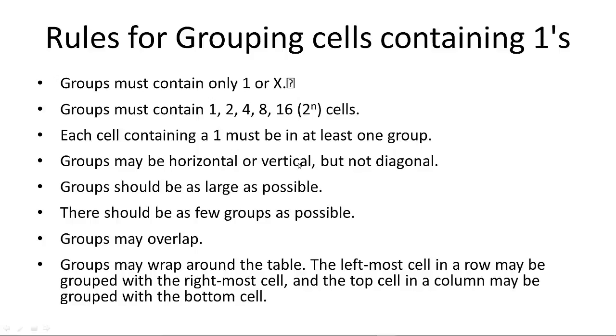Groups may be horizontal or vertical. We can't draw diagonal rectangles. Groups should be as large as possible, as I showed in the previous example. We want to draw the biggest rectangles with all 1s or x's. There should be as few groups as possible. Groups can overlap. And lastly, groups can wrap around the table. The leftmost cell in a row can be grouped with the rightmost cell, and the top cell in a column can be grouped with the bottom cell.